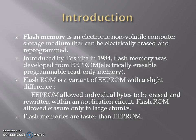What are flash memories? Flash memory is an electronic computer storage medium that can be electrically erased and reprogrammed. It is non-volatile, therefore it retains its data even if the power is cut off. Flash ROM is a variant of EEPROM with a slight difference. EEPROM allows individual bytes to be erased, whereas flash ROM allows erasure only in large chunks. Therefore, flash memory is faster than EEPROM.